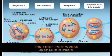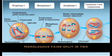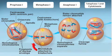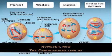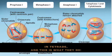The first part works just like mitosis — homologous pairs split in two. However, now the chromosomes line up in tetrads, and this is what they do.